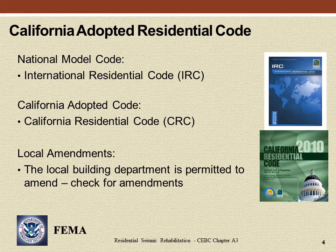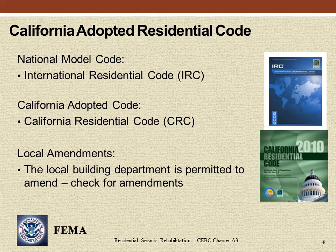California also adopts and amends the International Residential Code (IRC) to create the California Residential Code (CRC). This code may also be amended at the local city or county level. While the IRC does not address voluntary seismic rehabilitation, it does include discussion of alterations and additions. The CRC also can be used for guidance on prescriptive rehabilitation measures.